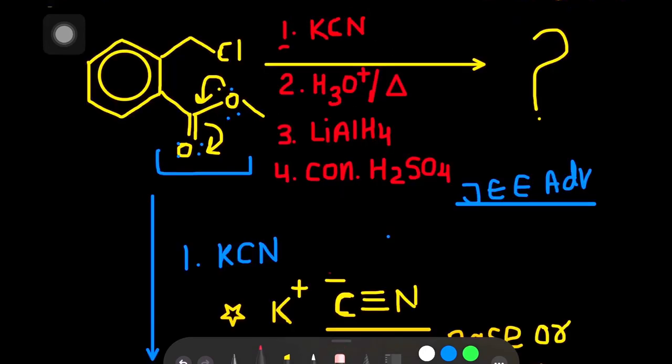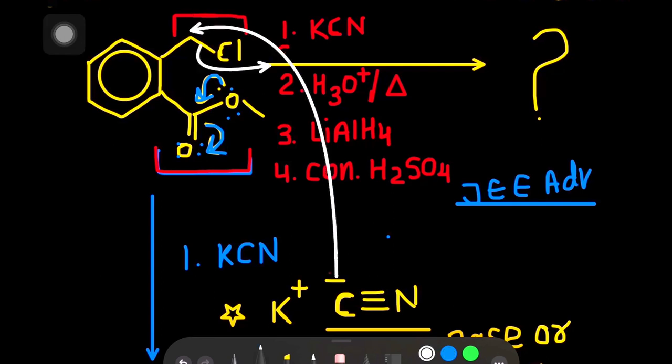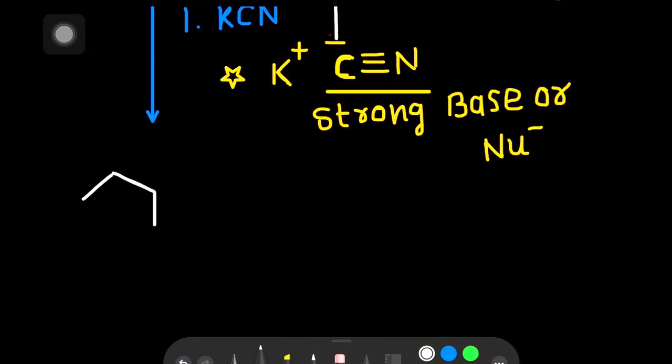Here two functional groups are given: one is ester and second is alkyl halide. Due to conjugation, this ester group is not an efficient electrophile. That's why the nucleophile will attack the alkyl halide electrophilic carbon. Chloride ion will be removed. Now the product has a new carbon-carbon bond. Here one carbon atom increases.